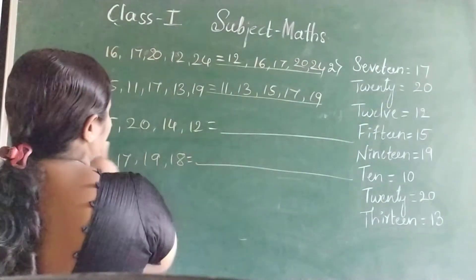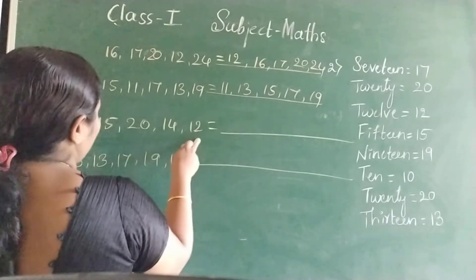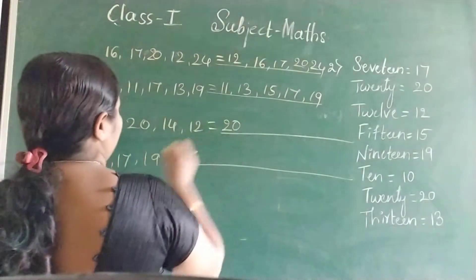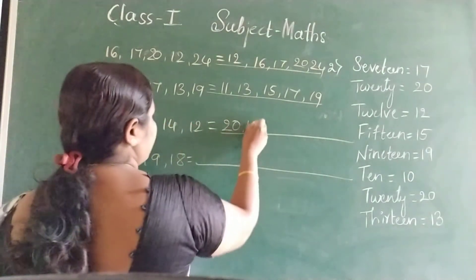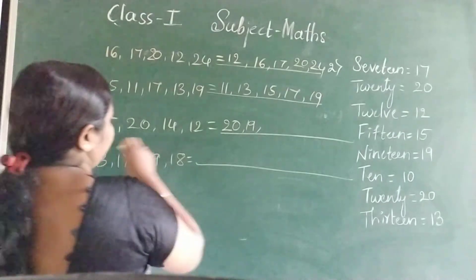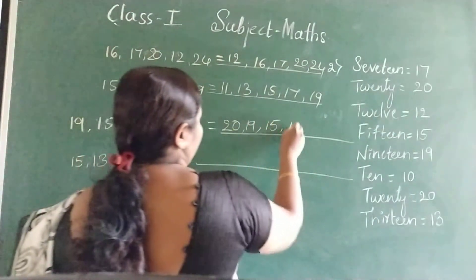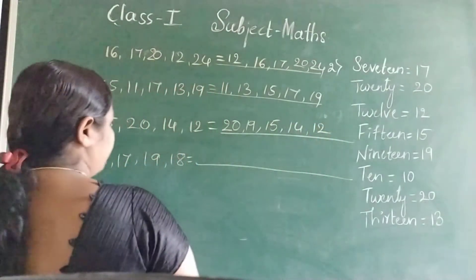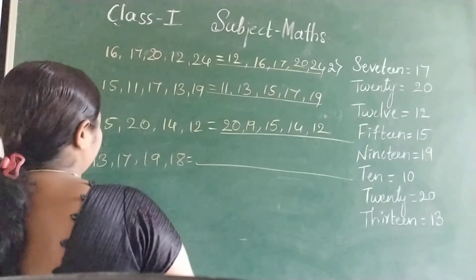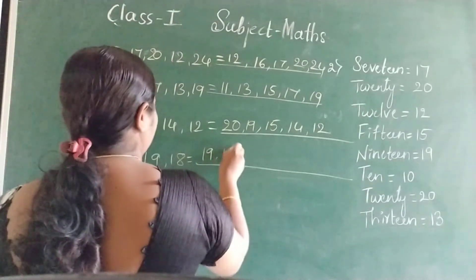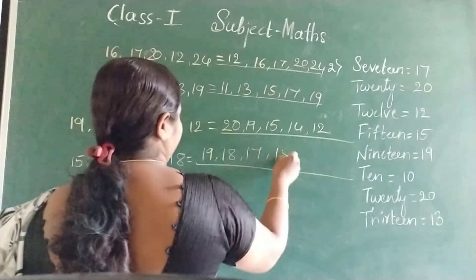First identify the big number. 19, 15, 20, 14, 12. So 20 is the big number. After 20, which is the big number? 19. After 19, 15. After 15, 14, and last 12. Just see the down numbers. Identify the big number. 19, 15, next 13. This is the descending order.